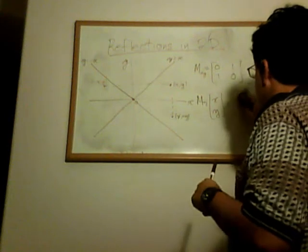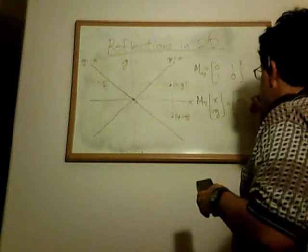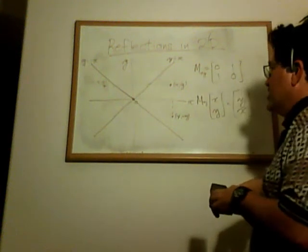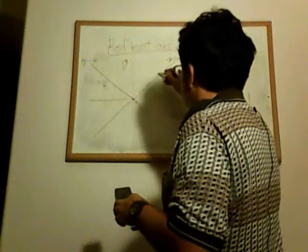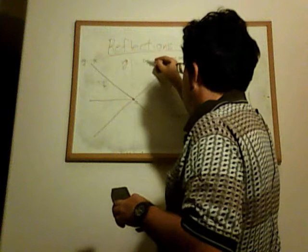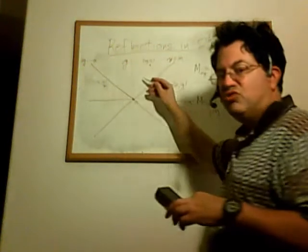So what Mxy of xy is going to give you is yx. So that just swaps the roles of x and y. So you can see what Mxy is going to do. I'm going to take this point x, y and reflect it about this diagonal axis to the point y, x.